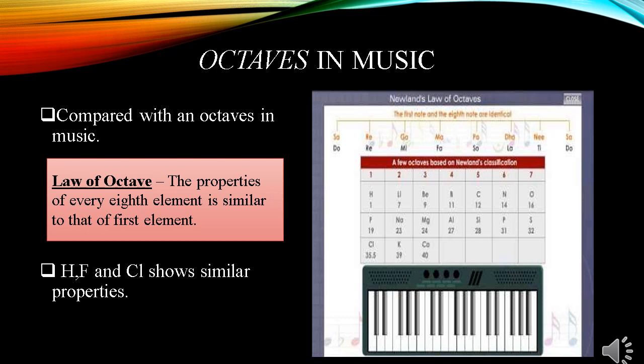Here, on the screen, in the table of arrangement, you can see the elements hydrogen, fluorine and chlorine resembles in their properties. Similarly, in second column, lithium, sodium and potassium resembles one another in their properties.